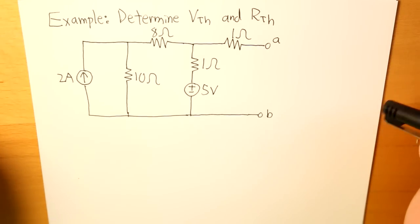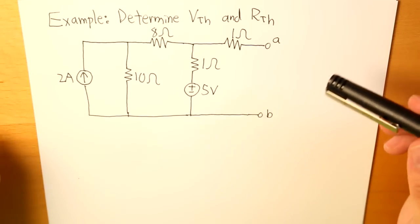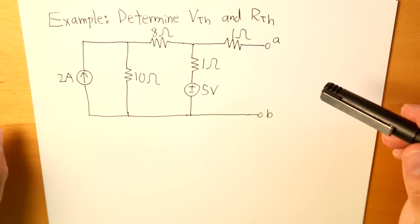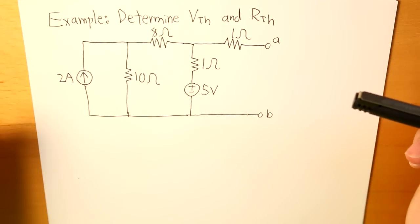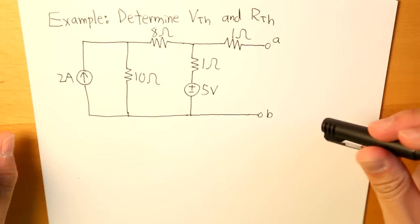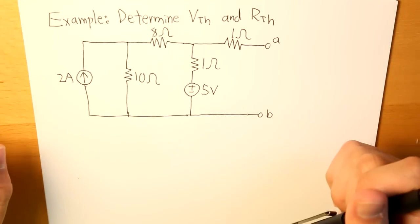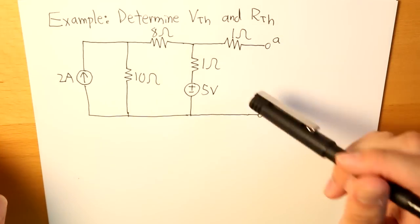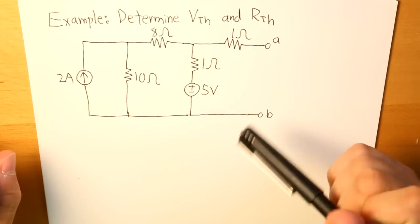Now I've said in my previous video that to find Rth, what we do is we turn off all the independent sources, and then we calculate what our total resistance is. And to find Vth, we keep the independent sources active, and we just find the voltage across A and B.